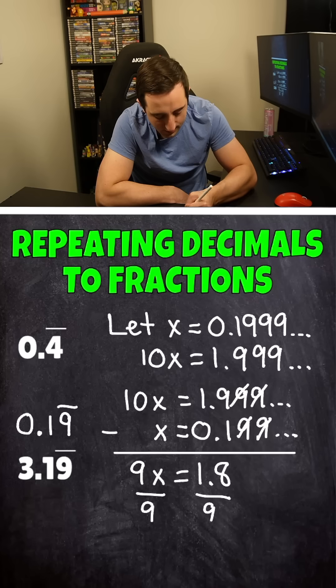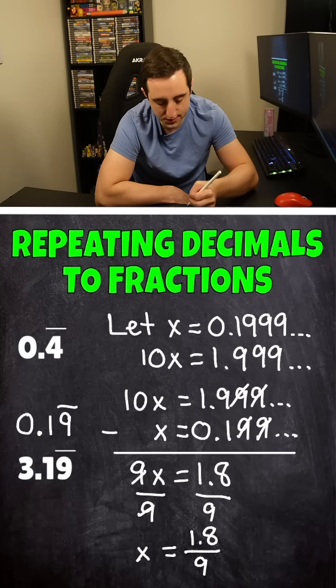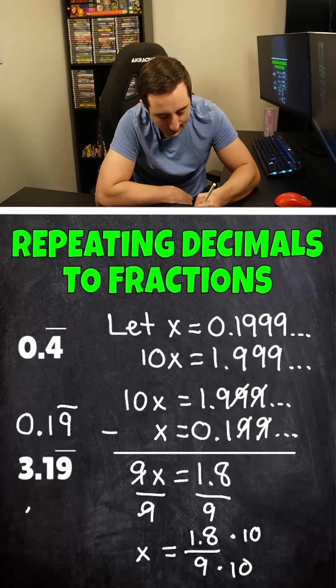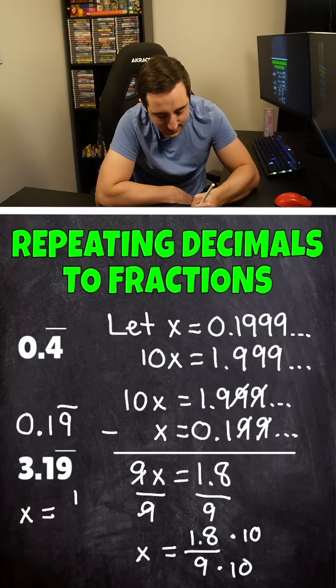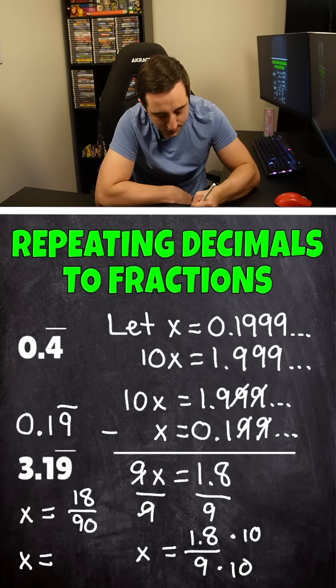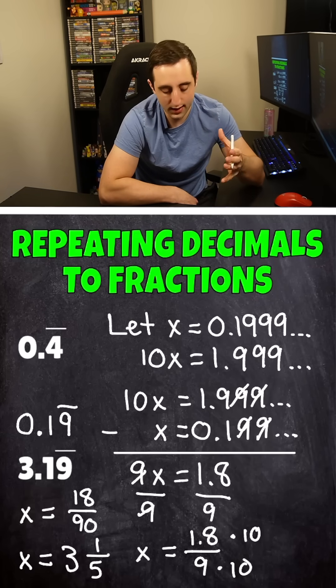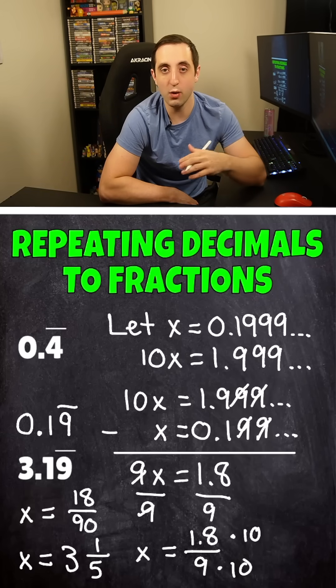We're still going to divide by 9, and we end up getting x is equal to 1.8 over 9. The only problem is we have a decimal point in our fraction still. Well, how do I move the decimal point one place value to the right to fix that? We're just going to multiply by 10 again. We've already done this trick once, and we end up getting x is equal to 18 over 90, which can be simplified. Both of these are divisible by 18, and our final answer is going to be a 3 out front because we're just going to tack on that 3 that we ignored at the beginning, and our final answer is 3 and 1/5.